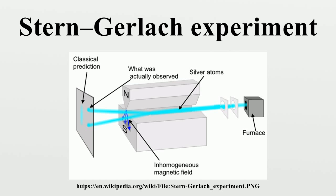The screen reveals discrete points of accumulation rather than a continuous distribution, owing to the quantum nature of spin.